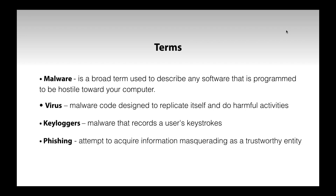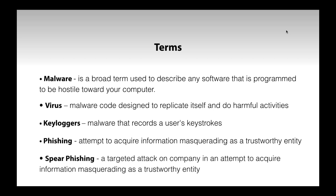Phishing is basically an attempt to acquire information by masquerading as a trustworthy entity. A more specific form is called spear phishing, where it's a targeted attack on a company or individual in an attempt to acquire information while masquerading as a trustworthy entity.